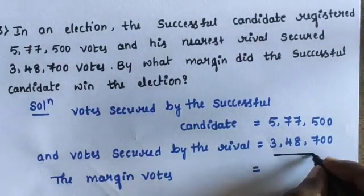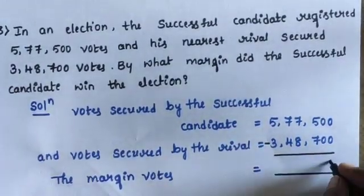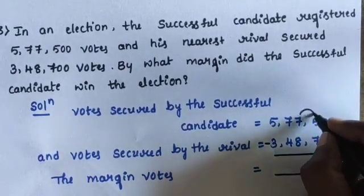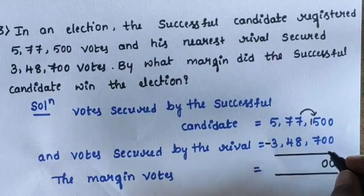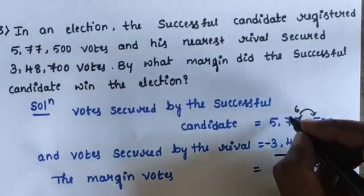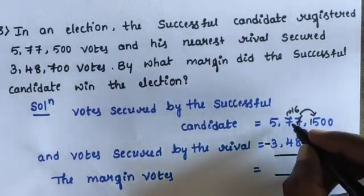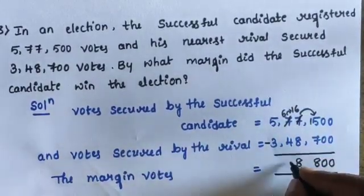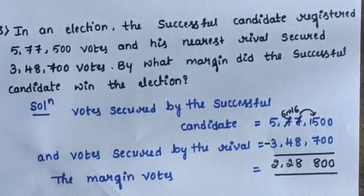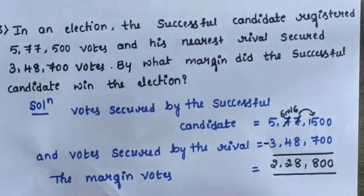This is a subtraction problem. Apply minus sign. 0 minus 0 is 0. Again 0 minus 0 is 0. 5 minus 7: take 1 carry, 15 minus 7 is 8. Remaining 6, 6 minus 8: take 1 carry, 16 minus 8 is 8, remaining 6. Then 6 minus 4 is 2. 5 minus 3 is 2. The margin votes for the successful candidate is equal to 2,28,800 votes.